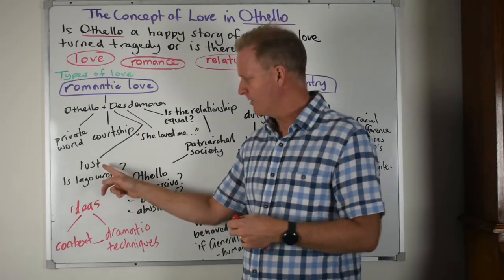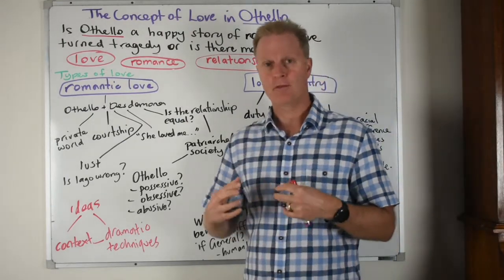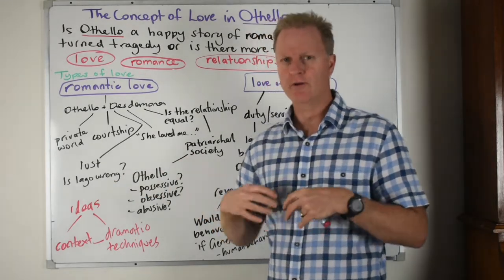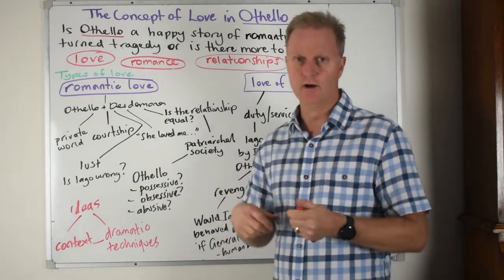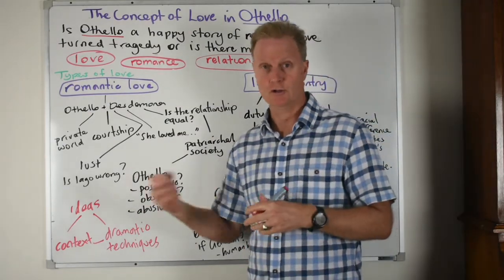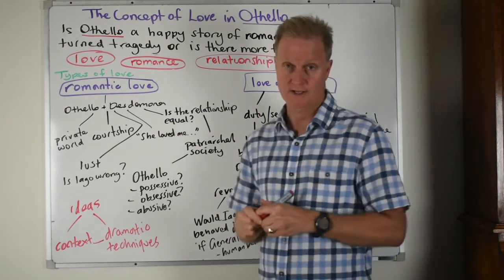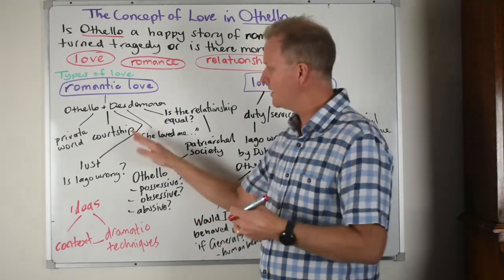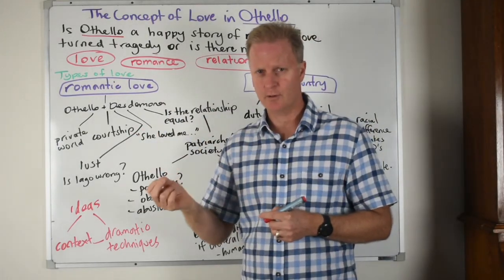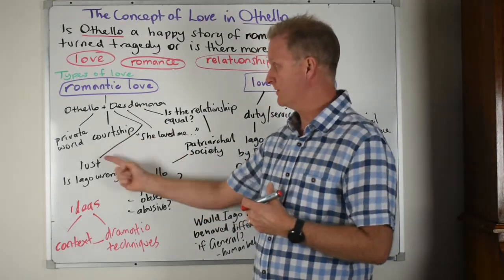Iago was talking about the fact that their romance and marriage was built on lust. He says to Roderigo that very soon their appetites will wane and they'll grow tired of each other — and that'll be a great time for Roderigo to become romantically involved with Desdemona. So you have to think: is Iago wrong in saying that? Is their relationship built on what's required for a long-lasting love, or was it destined for failure from the beginning?